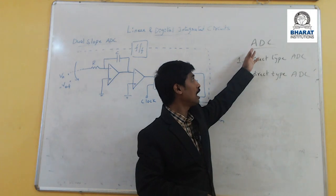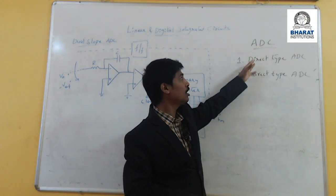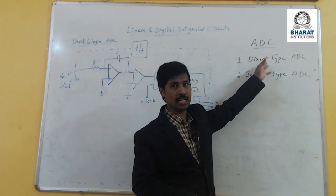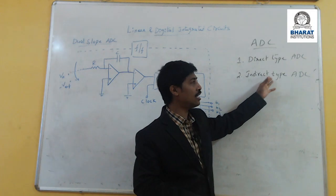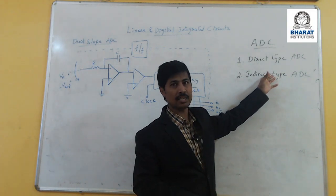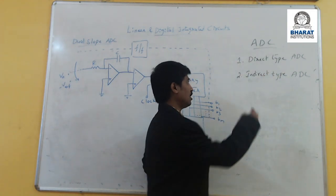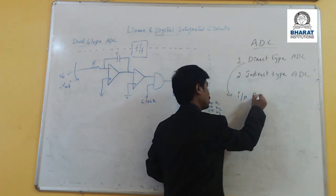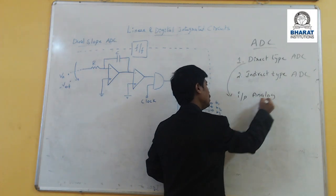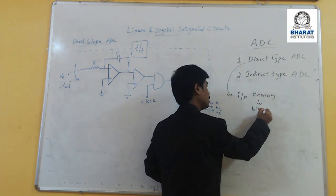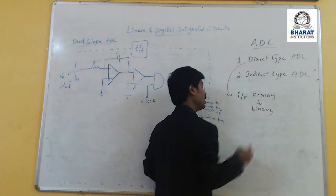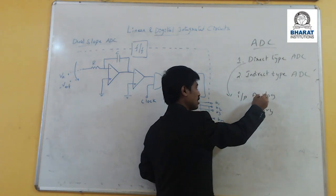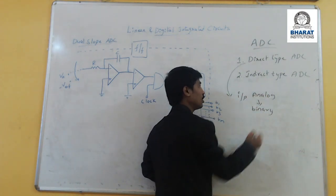In analog to digital converters, we have a classification as direct type ADC — direct type analog to digital converters — and indirect type ADCs. Direct type means giving input as an analog signal and it is converted into binary. That is the main functioning of ADC, analog to digital conversion. Directly we give input as analog in nature and convert it into binary.